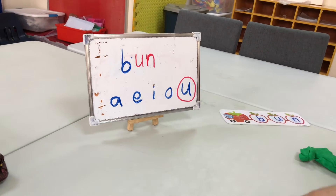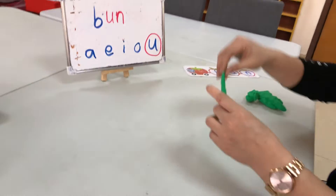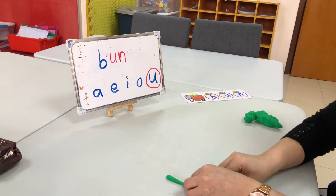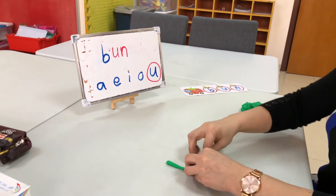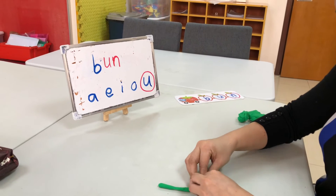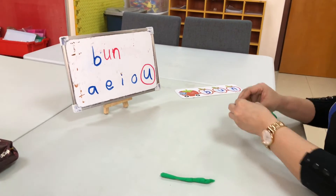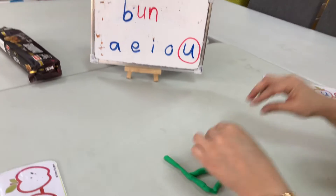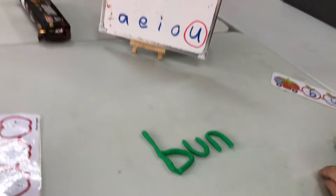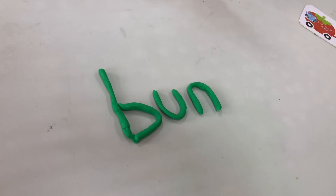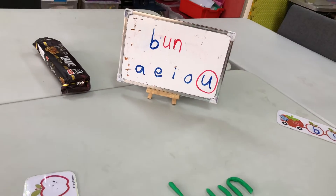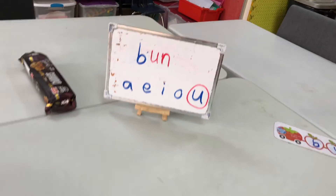You can create the word using play-doh — make the word 'bun.' When you do that, make sure you sound out the letters. Now you can see the word: bun. Use the play-doh to make these words. We can also write different words.